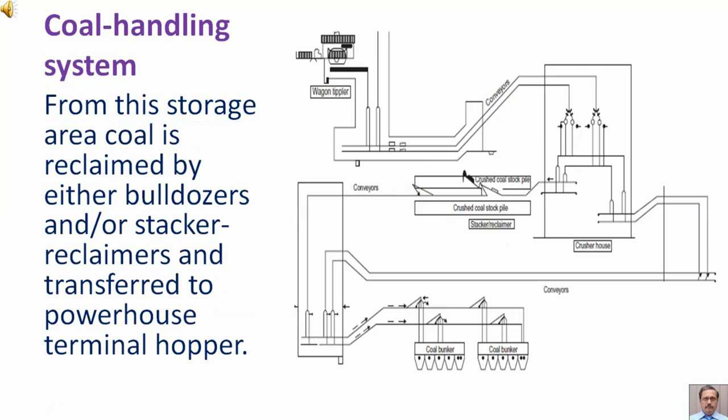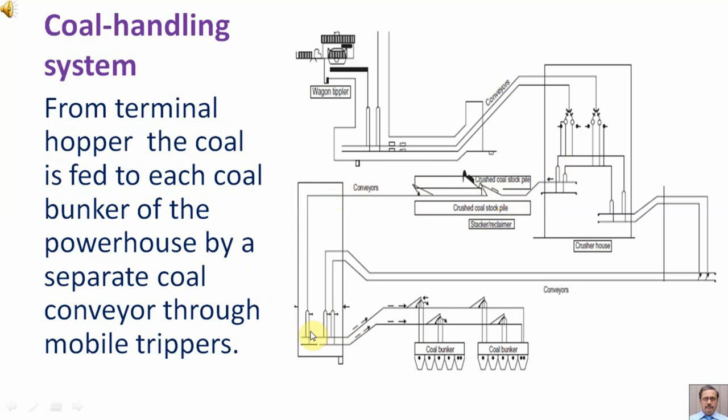From this storage area, coal is reclaimed by either bulldozers and/or stacker reclaimers and transferred to powerhouse terminal hopper. From terminal hopper, the coal is fed to each coal bunker of the powerhouse by a separate coal conveyor through mobile trippers.